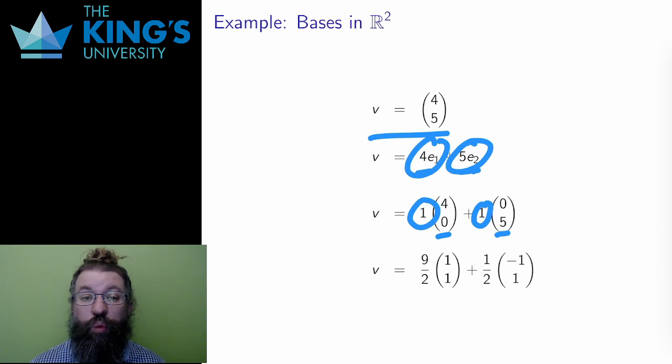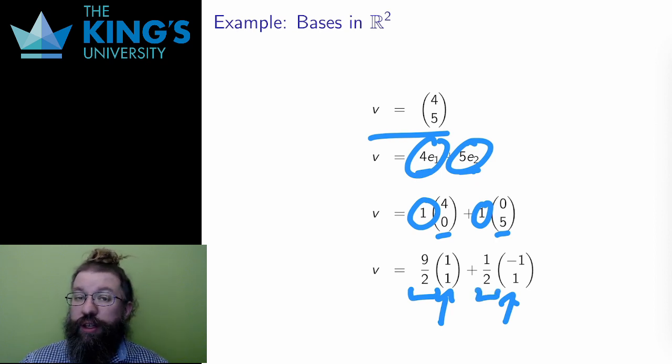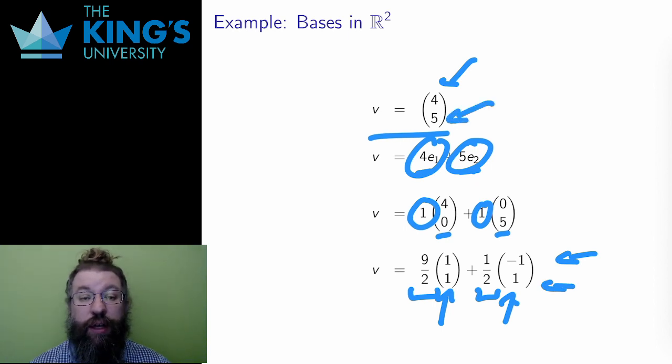The vectors (1, 1) and (-1, 1) are also a basis. How can I write v in terms of this basis? It turns out that v is 9/2 times (1, 1) plus 1/2 times (-1, 1). In the first coordinate, I get 9/2 minus 1/2, which is 8/2 or 4. And in the second coordinate, I get 9/2 plus 1/2, which is 10/2 or 5. And I do recover the vector v this way.